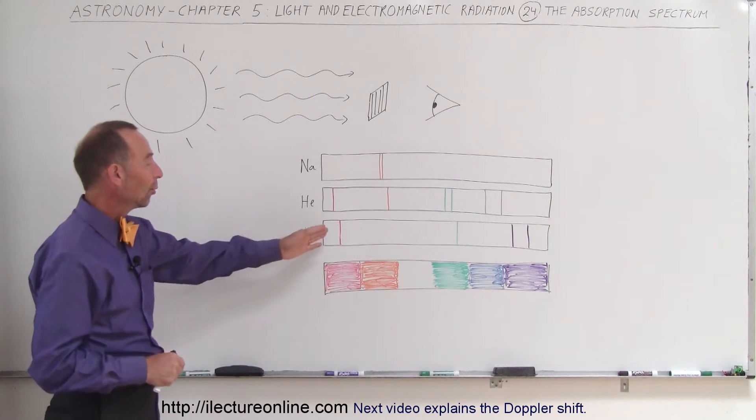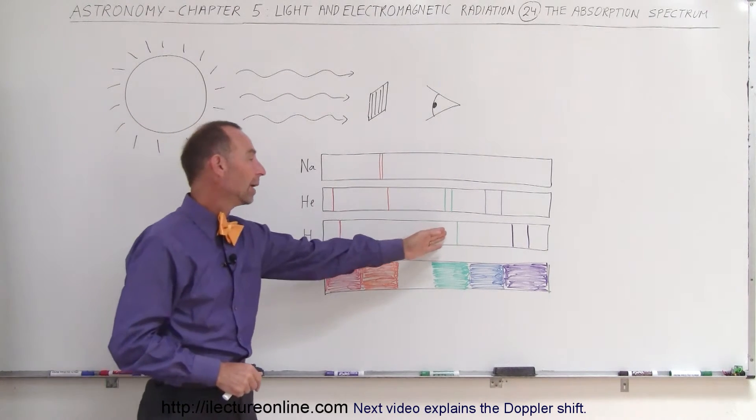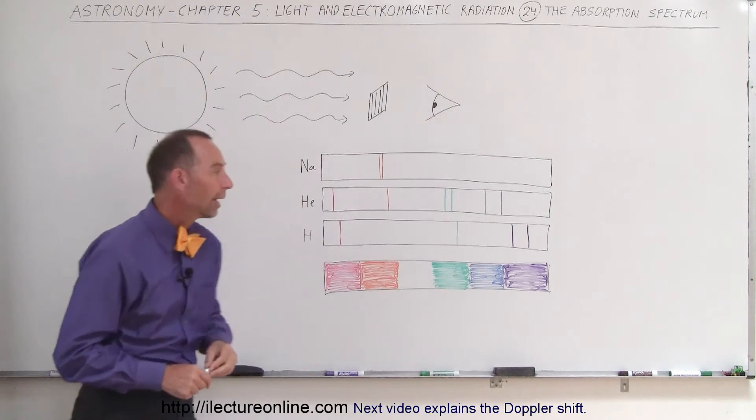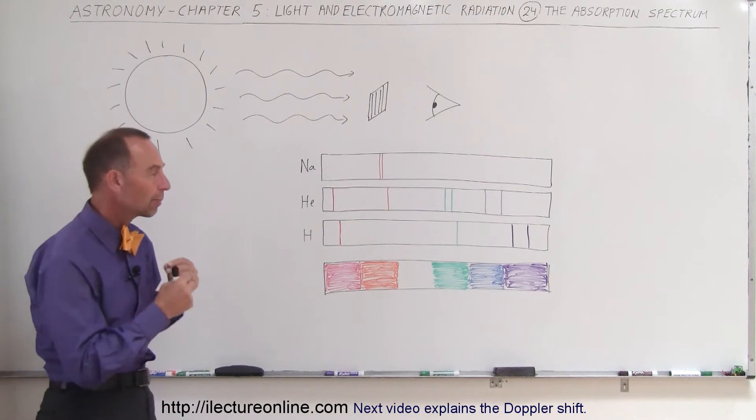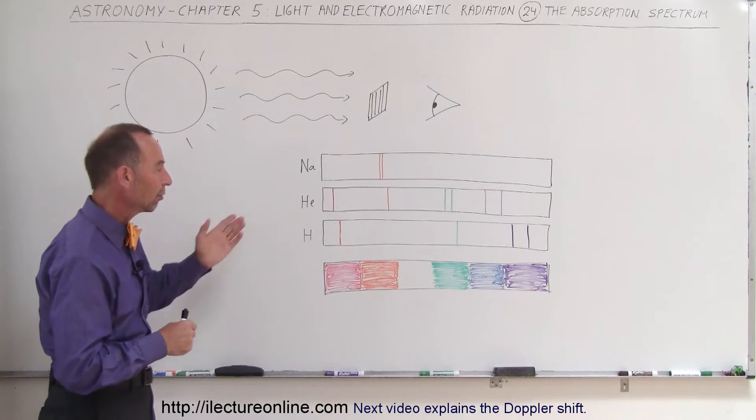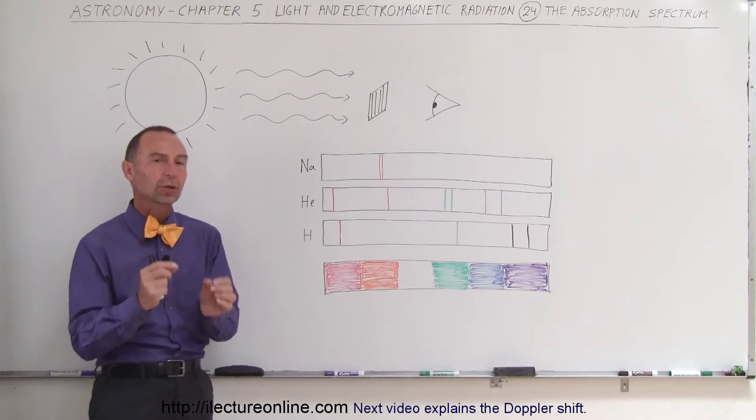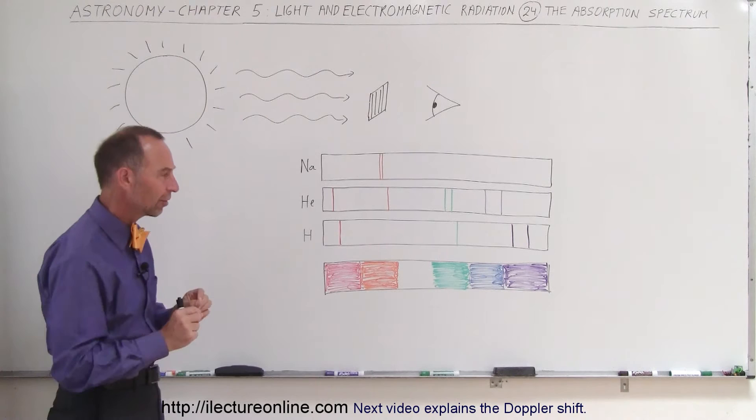So in the case of hydrogen, we have the H-alpha, the H-beta, the H-gamma ray, and the H-delta ray, the four different colors that are the most prominent colors of hydrogen, and that's what we would call an emission spectrum. It only emits very specific wavelengths.